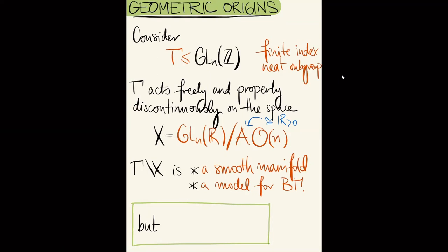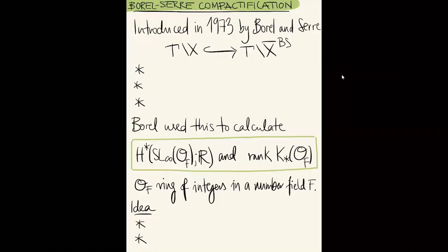However, this space is not compact, which makes everything much more difficult for calculational purposes. To remedy this, several compactifications of X/gamma have been introduced, quite different and suited for different purposes. I'll introduce two: the Borel-Serre and the Reductive Borel-Serre compactification. The Borel-Serre compactification was introduced in 1973 by Borel and Serre.